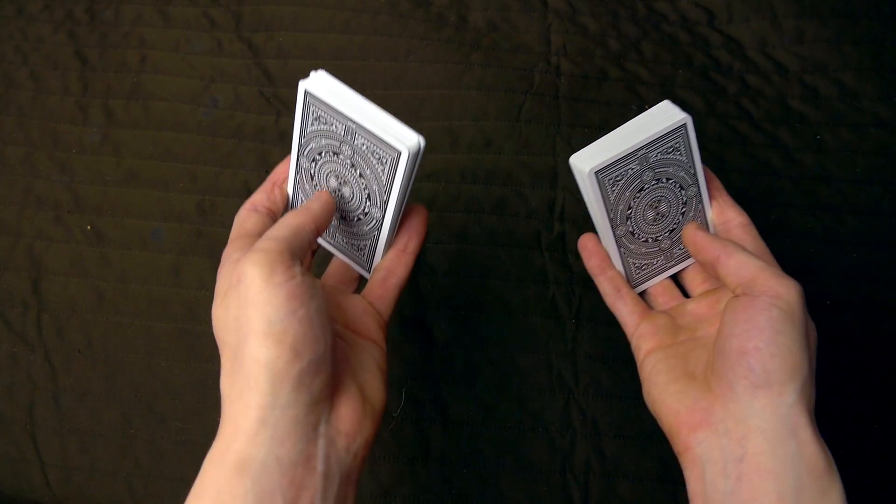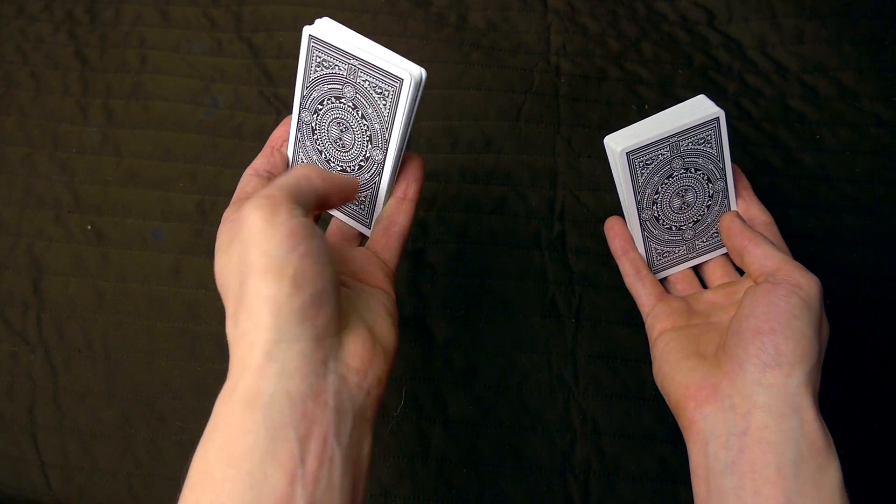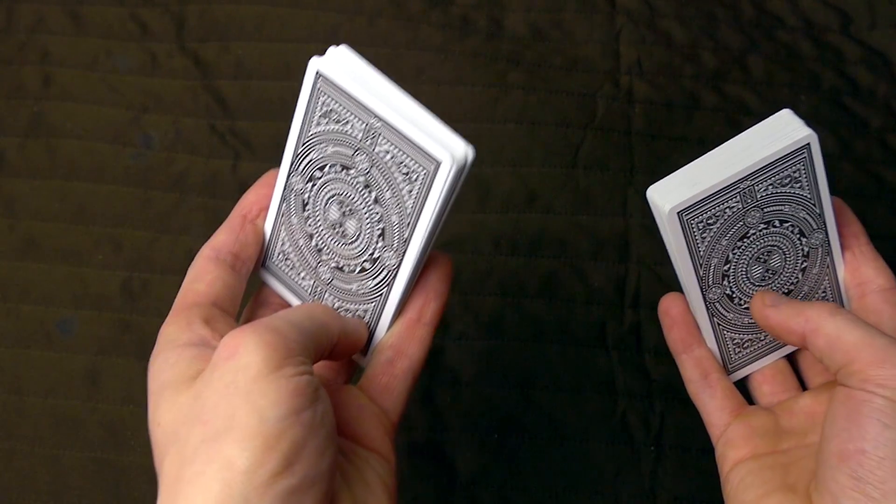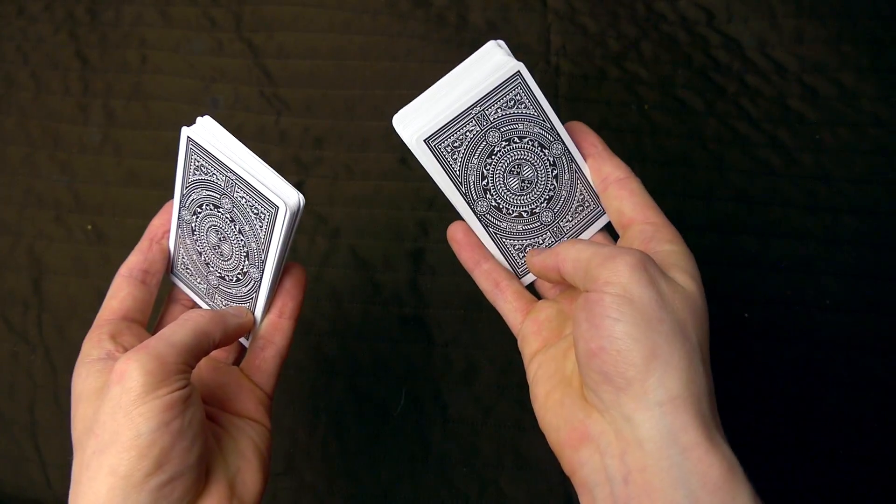So once the position is correct, now your thumb is going to go all the way down here to the bottom. So if you're doing it with the left hand, then your thumb is going to go all the way down to the right corner. And if you're doing it with the right hand, then the thumb is going to go all the way down to the left bottom corner.